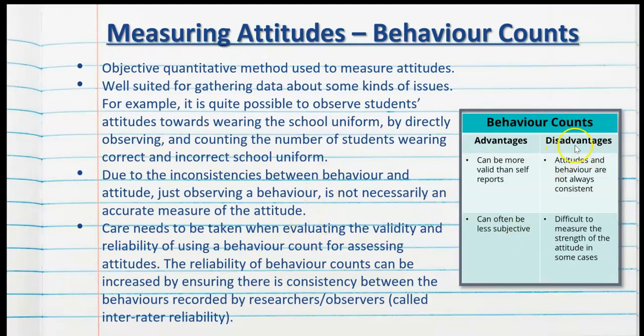A disadvantage of behavior counts is that attitudes and behavior are not always consistent — this may be due to cognitive dissonance and other factors affecting the bidirectional relationship. So even though we may be counting certain behaviors, that doesn't mean the attitude is correct. For example, someone may be putting their hand up and doing all of their work for a particular subject, yet they dislike it — simply counting behaviors would indicate a positive attitude, which is not always the case.